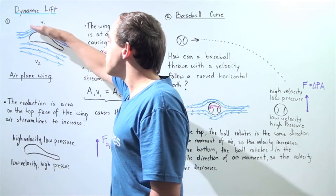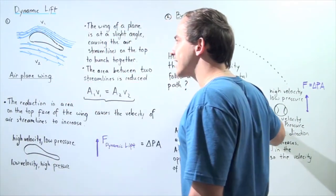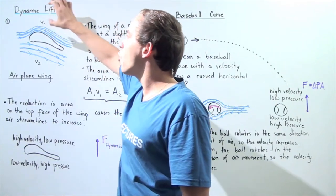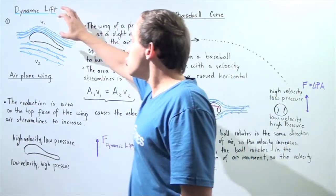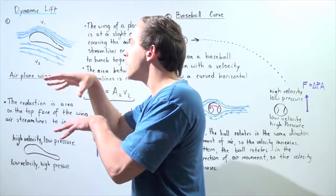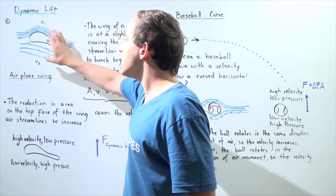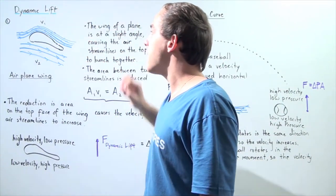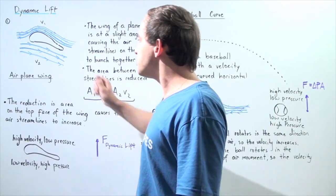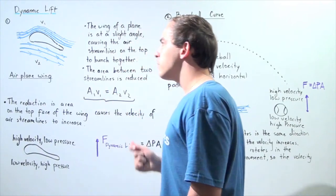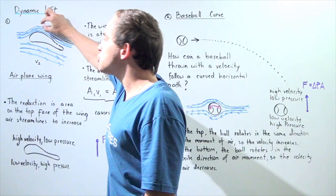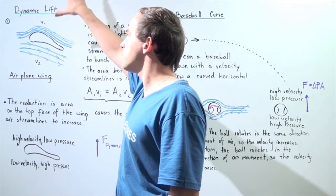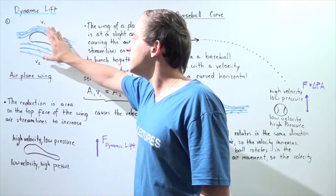Because our airplane wing is at an angle with respect to the x-axis — with respect to the direction of motion — notice what happens to the streamlines of air on the top portion of the wing. The streamlines collect together; they bunch up at the top portion and are more separated on the bottom portion. Because the area between any two streamlines on the top portion is smaller than the area between any two streamlines on the bottom portion, we know from the equation of continuity that because the area is smaller, the velocity must be higher. So the velocity of the streamlines on the top portion of the wing is higher than on the bottom portion.